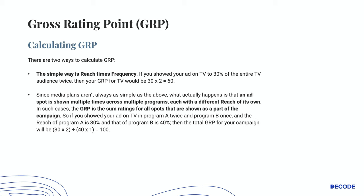Since media plans are not always that simple, what actually happens is that an ad spot is shown multiple times across multiple programs, each with a different reach of its own. In such cases, the GRP is the sum of ratings for all spots shown as part of the campaign. So if you showed your ad in program A twice and program B once, and the reach of program A is 30% and program B is 40%, then the total GRP will be 30×2 + 40×1, which equals 100.